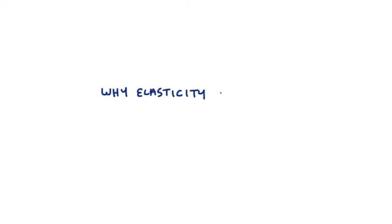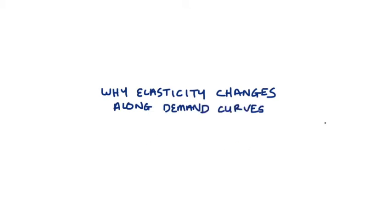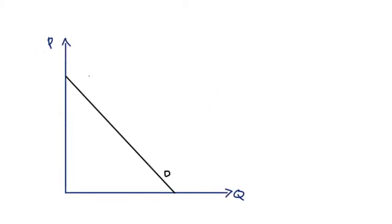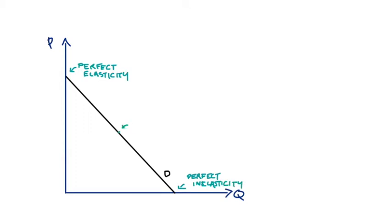Hi guys, in this video I'm going to discuss why our elasticity of demand changes along our demand curves. In particular I'm going to discuss this result: our linear demand curves with any sort of incline are going to go from a point of perfect elasticity right up the top here to a point of perfect inelasticity down here, with a point right in the middle where we have what we call unit elasticity.